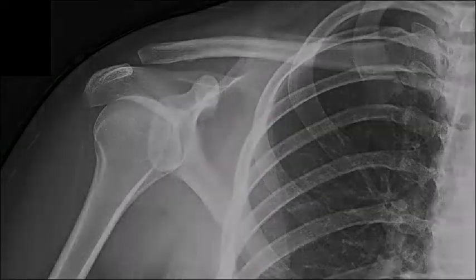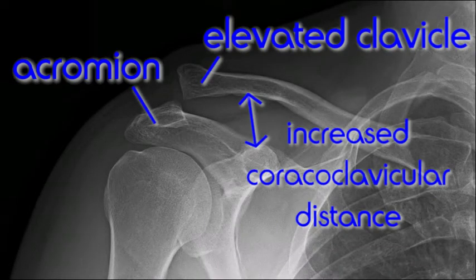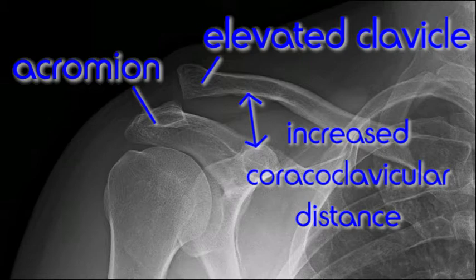In type 2 and more severe injuries, the end of the clavicle is displaced in relation to the acromion. The position of the clavicle and the amount of separation are used to grade the severity of the injury.